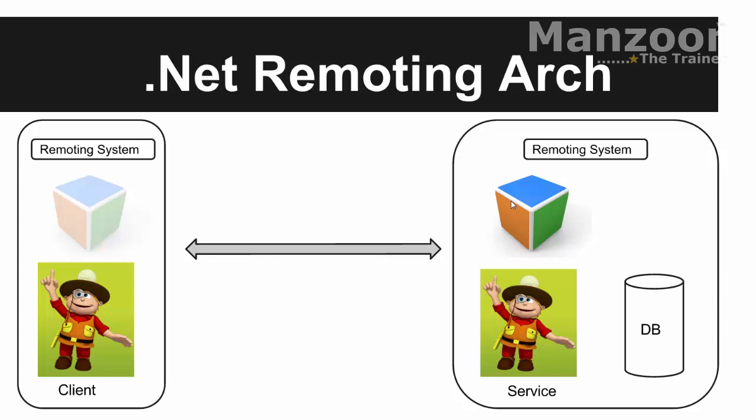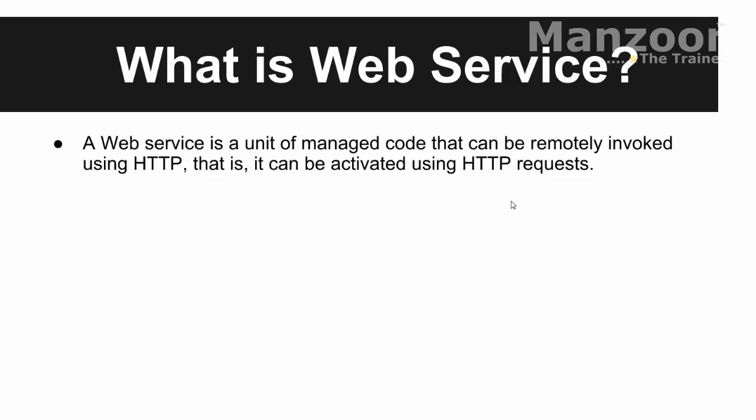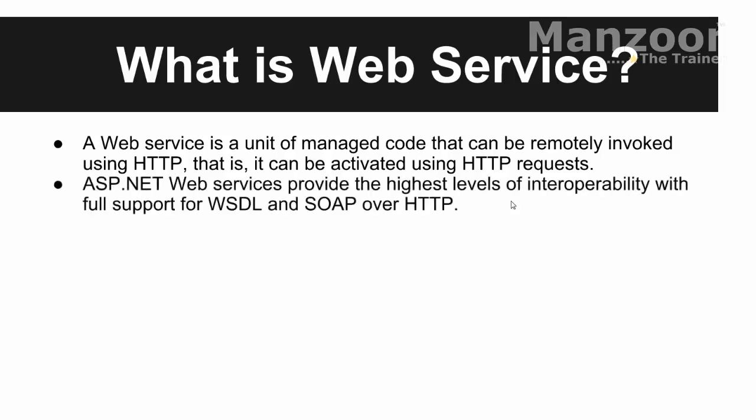Then we saw a need for a .NET application to interact with a Java application, or vice versa — I don't want the client to be limited to .NET. I want my client to be of any kind. So we thought of web services. Web services work on XML concept — we exchange data in the form of XML over HTTP. A web service is a unit of managed code that can be remotely invoked using HTTP requests. ASP.NET web services provide the highest level of interoperability — full support for WSDL and SOAP over HTTP. WSDL stands for Web Service Description Language and SOAP stands for Simple Object Access Protocol. These two are XML files.